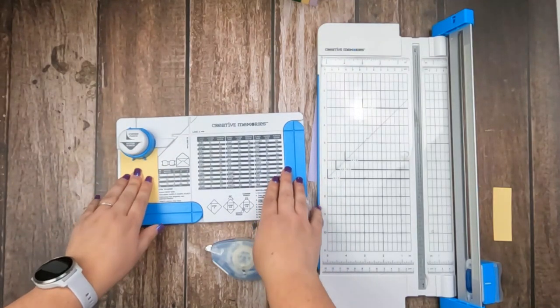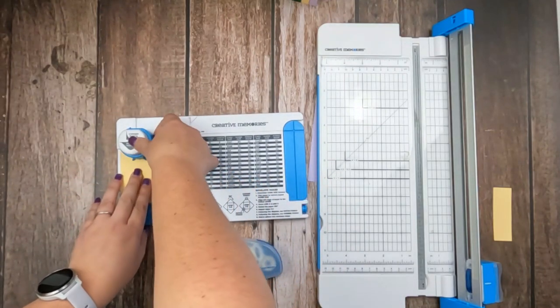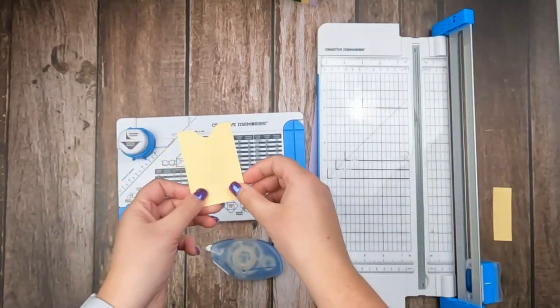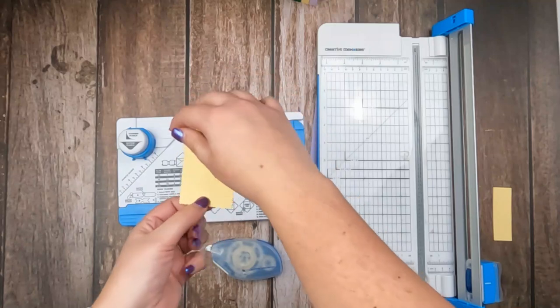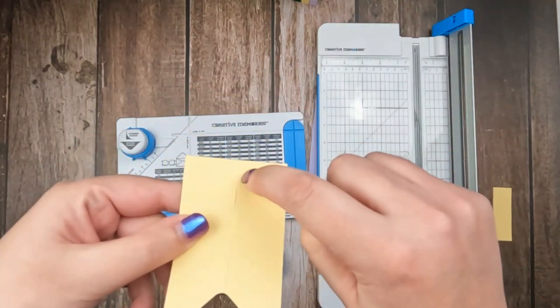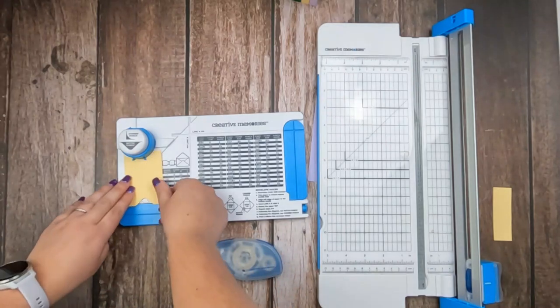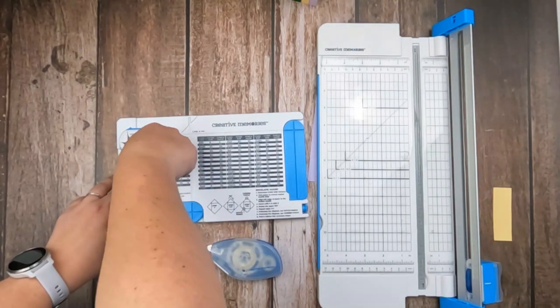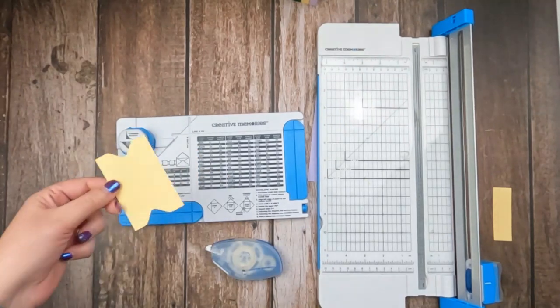Now I'm going to pull out my envelope and bow creator. And I'm going to be using the notch punch that is built into the corner of the tool. So you're going to slide the paper in so that the little plastic nub here is going to line up with the crease that you made in the center of your paper.